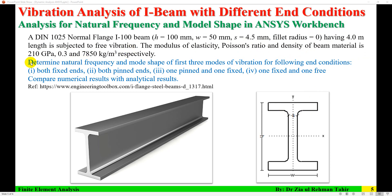The required output is natural frequency and mode shapes for the first three modes of vibration for four beam end conditions: both fixed ends (fixed-fixed beam), both pin ends (simply supported beam), one pinned and one fixed, and one fixed and one free (cantilever beam). Then we compare numerical results with analytical results.